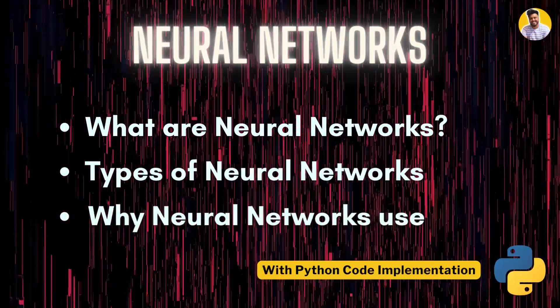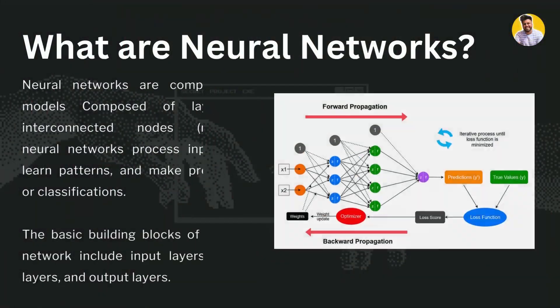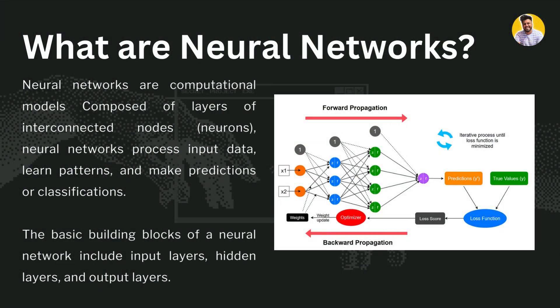The first question is: what are neural networks? Neural networks are computational models composed of layers of interconnected nodes, basically called neurons. Neural networks process input data, learn patterns, and make predictions or classifications, all based on their internal structure.